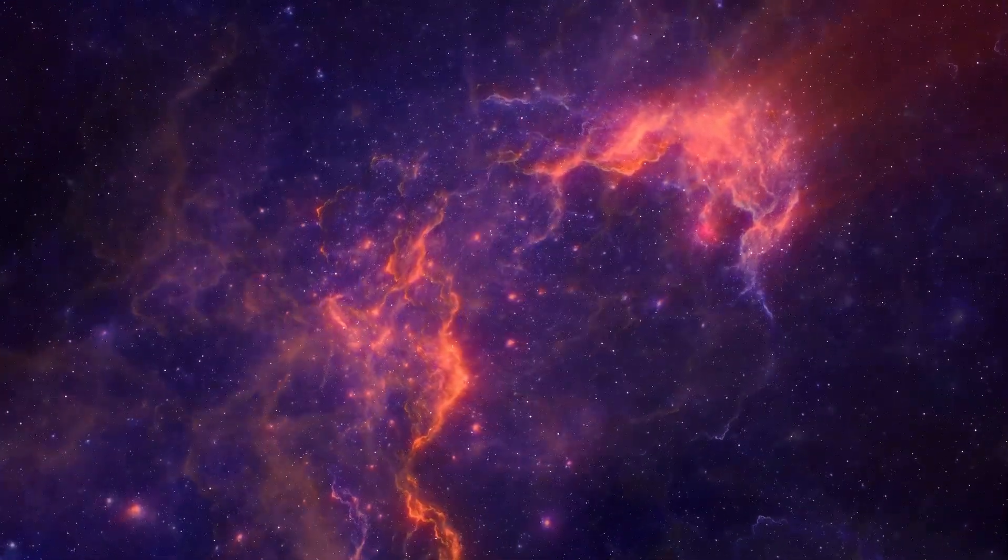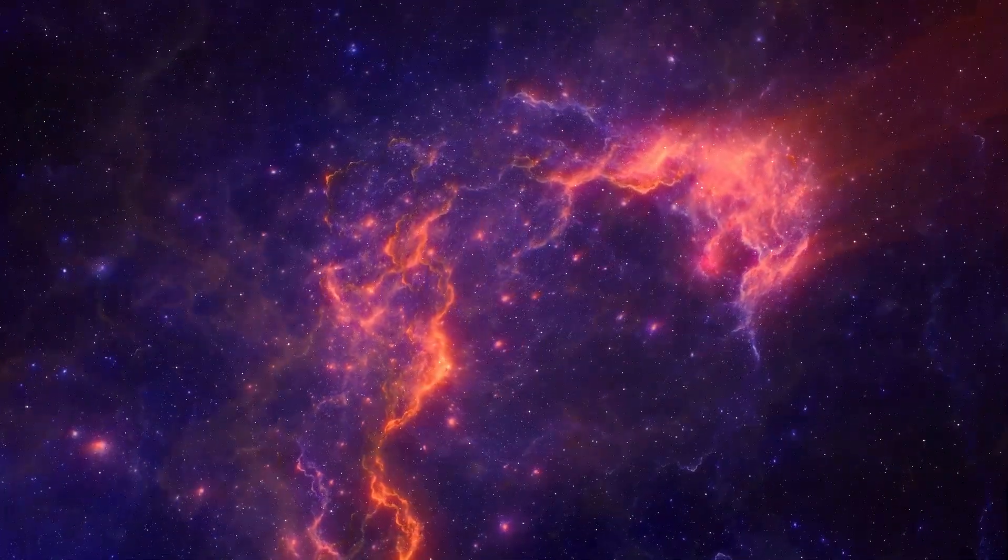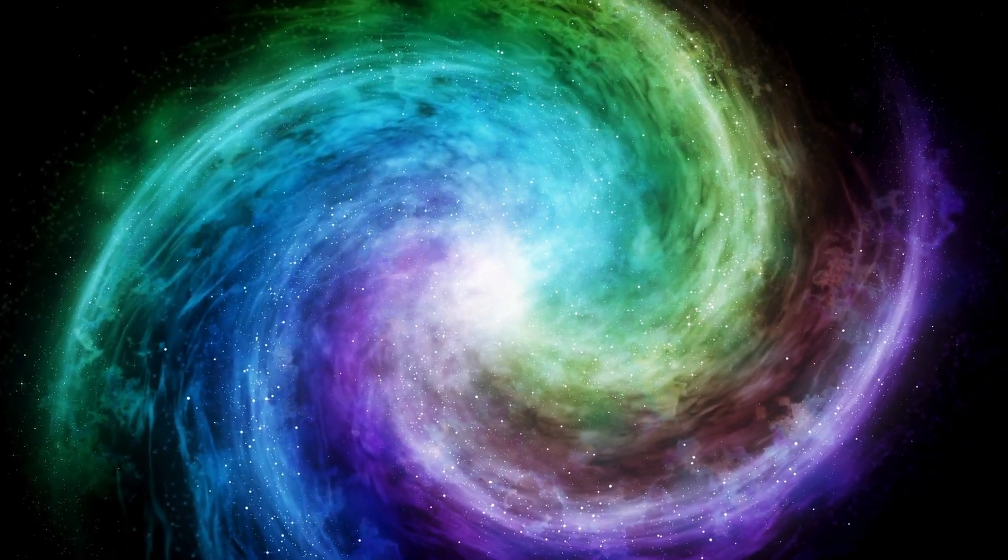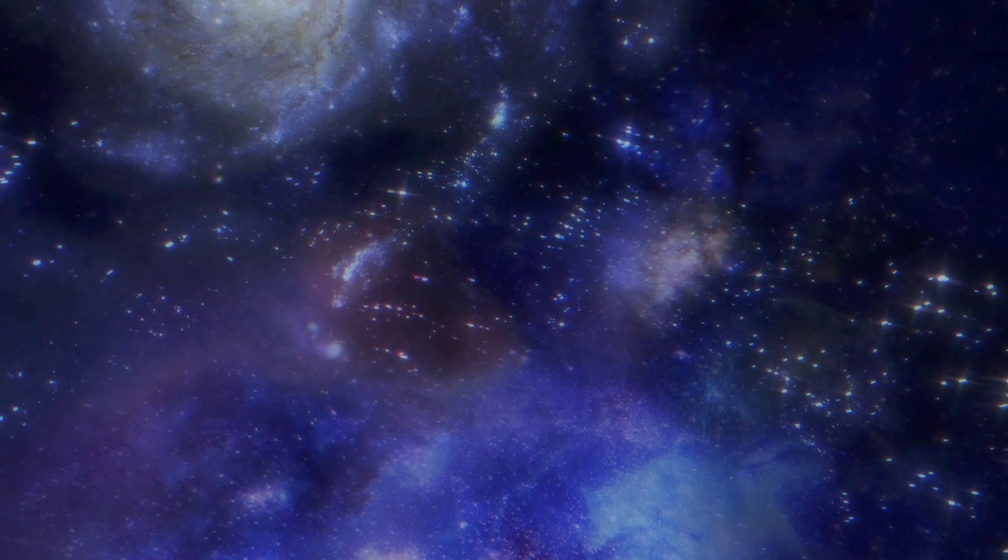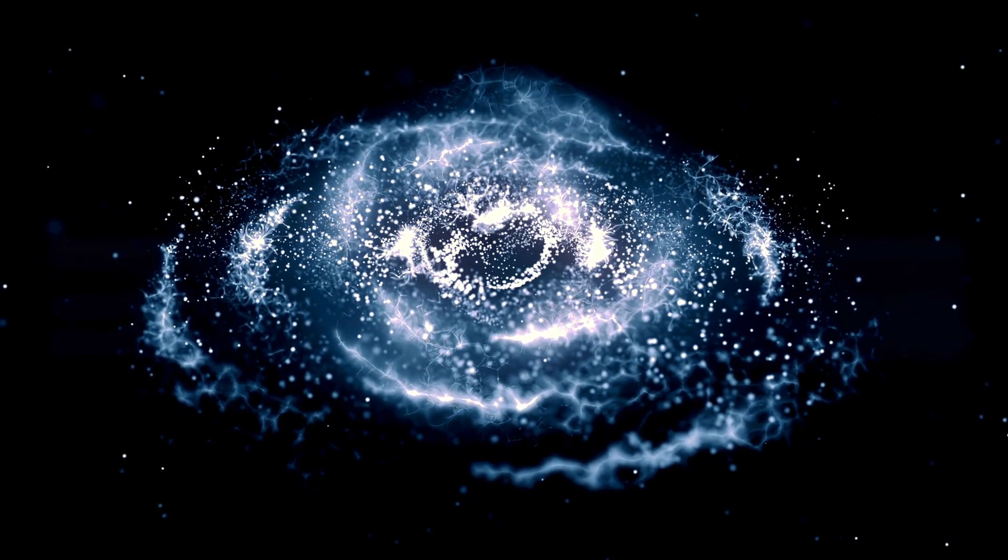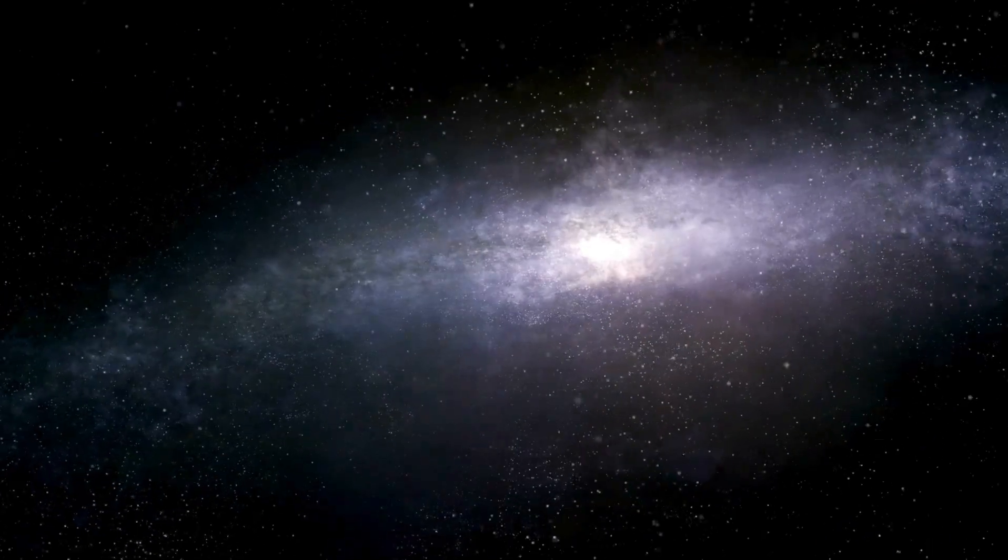Next in line were the population 2 stars, forming a bit later, but still in the universe's early days. Their original materials were light on heavy elements, especially iron. Many of them danced through their stellar life cycles, bursting into supernovas and adding more heavy elements to the universal mix.